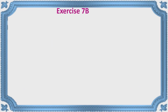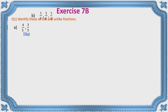Let's practice exercise 7b, question one: Identify these as like or unlike fractions. For four-fifths and three-fifths — both have the same denominator, five, so they are like fractions. For one-ninth, one-sixth, and one-half — you may get confused seeing the same numerator one, but we are concerned only about the denominator. Since the denominators are different, these are unlike fractions.